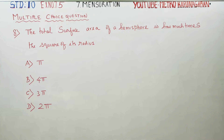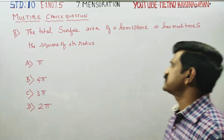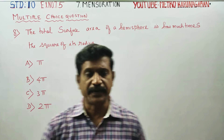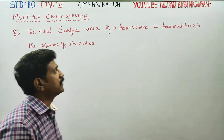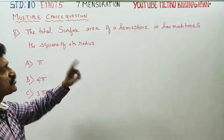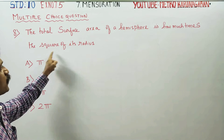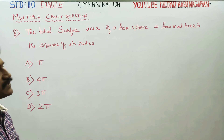Dear 10th standard students, I am Yattro Karnagaran. In exercise number 7.5, sum number 8: the total surface area of the hemisphere is how much times the square of its radius?